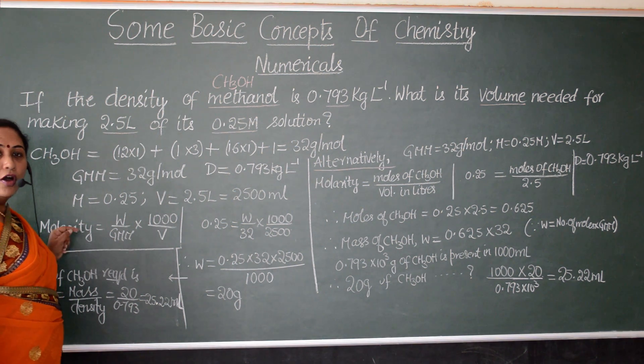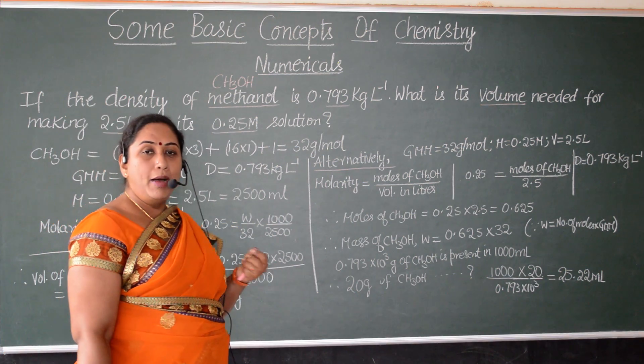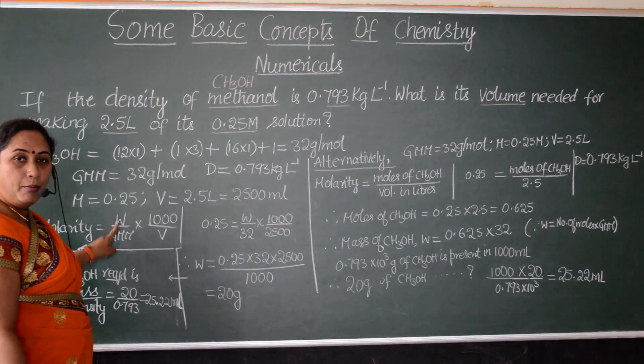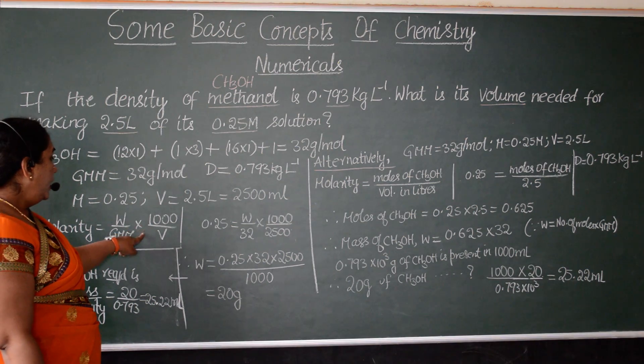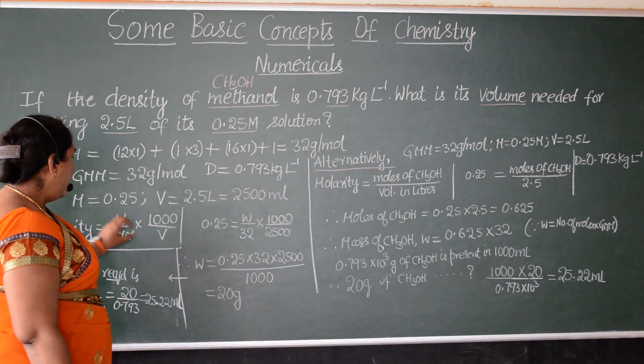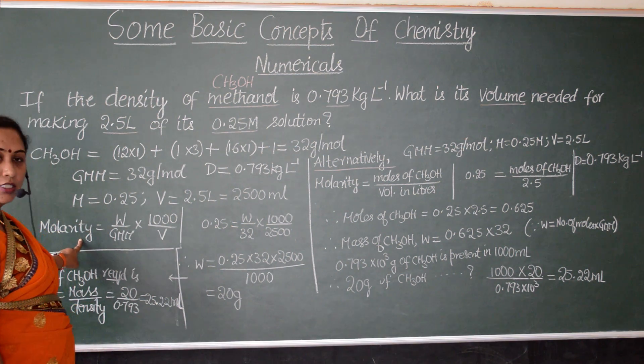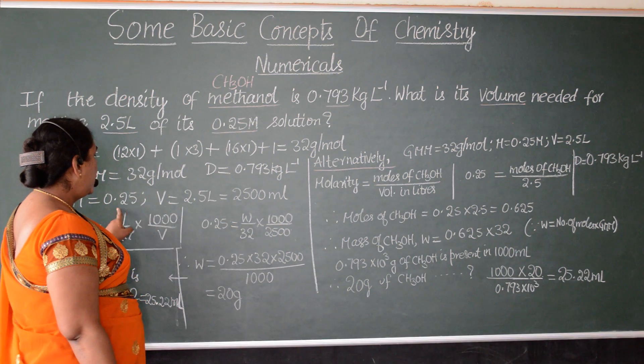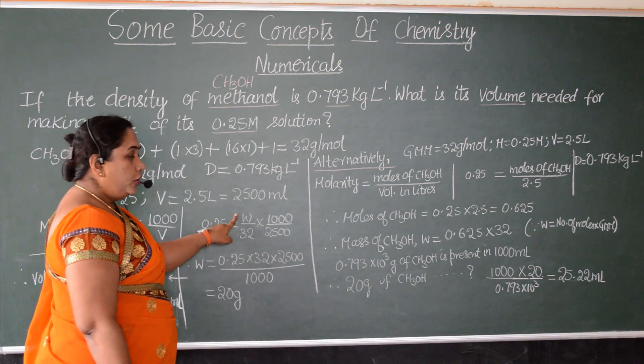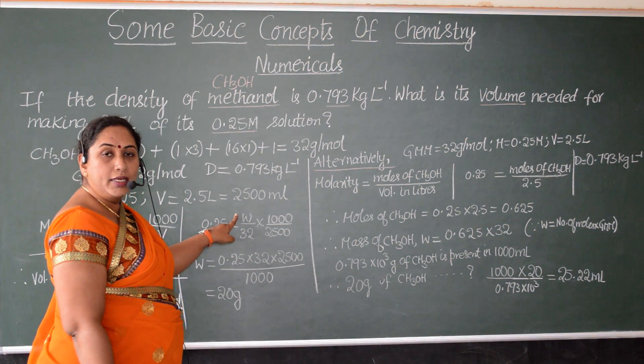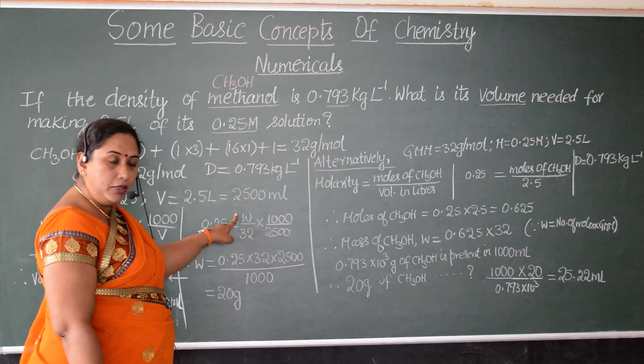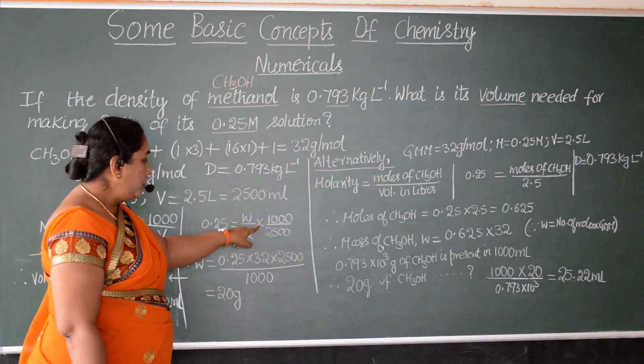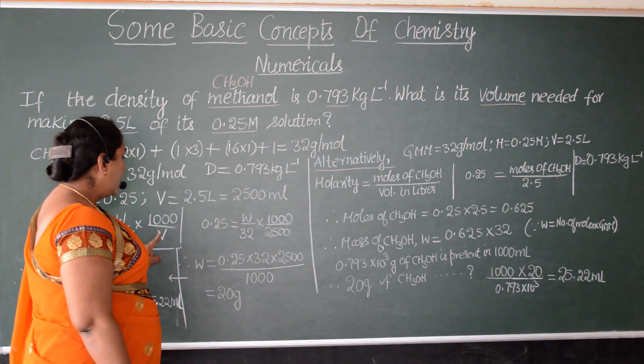Then, we can write the formula for finding out the mass. Molarity equals given mass by gram molecular mass into 1000 by volume. So first, let us substitute as per this formula. This molarity value we know is 0.25. Do we know the given mass? Mass is not given to us.